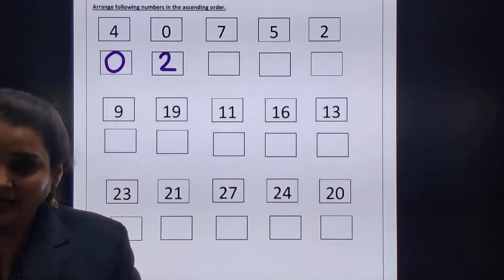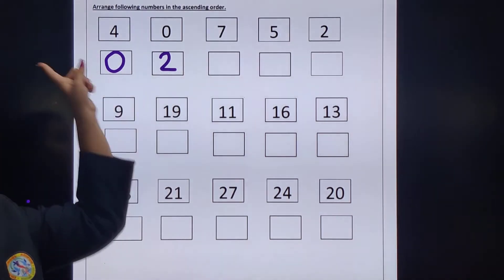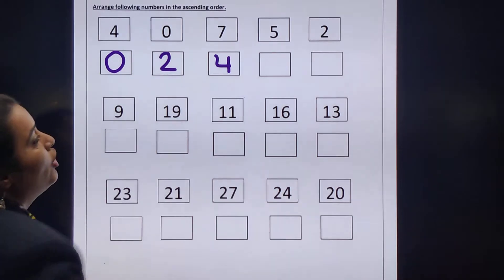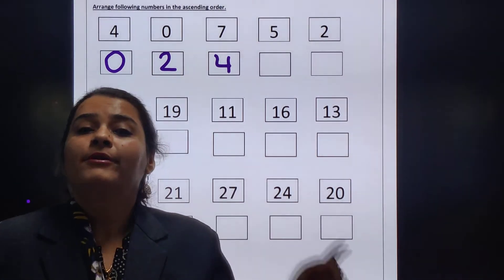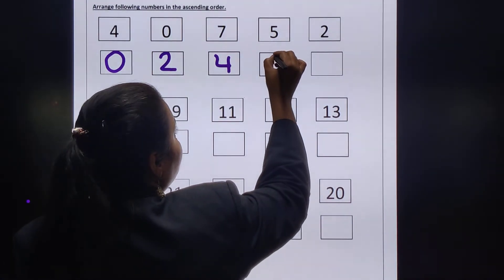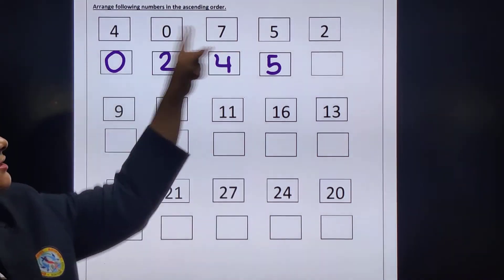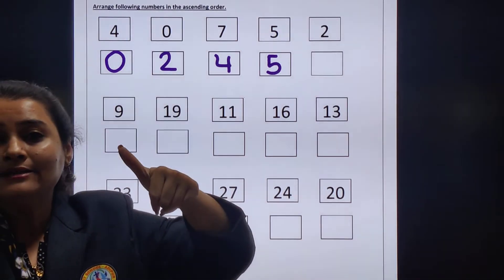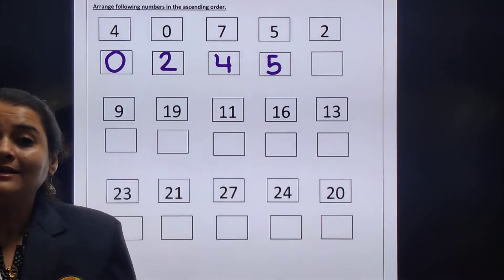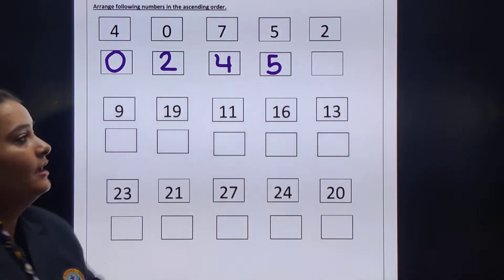Then which number will come? 3. Then after 3, which number comes? 4. Can we see 4 number over here? Yes. So I will write next number 4. Then which number will come after 4? Number 5. And number 5 is here? Yes, it is there. So I will write number 5 over here. Then which number will come? Number 6. Is there any number 6 in this line? No, there is no number 6, so I don't have to write number 6. Then next, number 7 will come. So I will write number 7 over here.